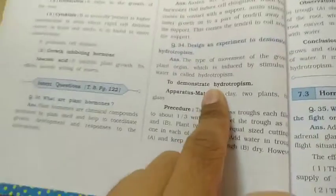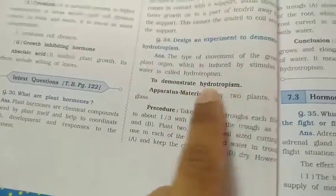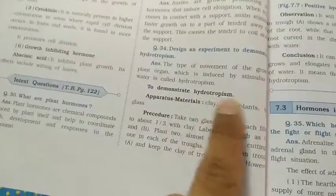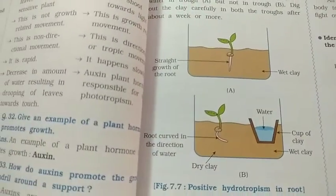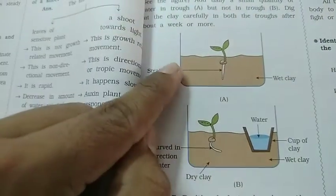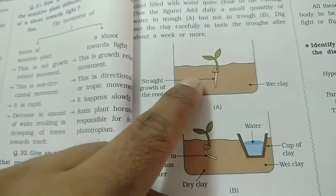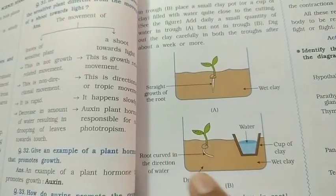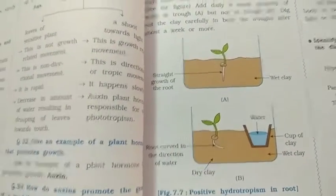When roots are in the ground, the roots show tropism in the direction of water — this is called hydrotropism. This experiment demonstrates that roots grow toward water. Where water is available uniformly, growth is straight; but where water is only on one side, you can observe the roots bending — this is hydrotropism.